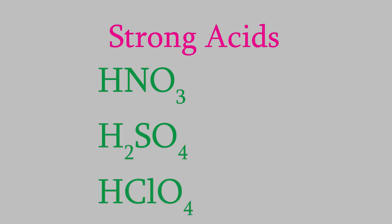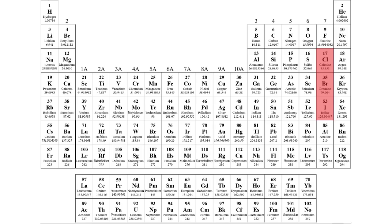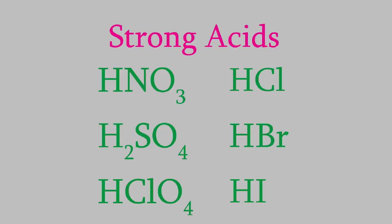The only common strong acids are nitric acid, sulfuric acid, perchloric acid, hydrochloric acid, hydrobromic acid, and hydroiodic acid. Notice that the last three of these are just hydrogen combined with one of these three atoms of the periodic table. That should help make them easier to remember. And that's it. If you know these six acids, you know all of the common strong acids. Every other acid that you ever see in our course will be a weak acid.